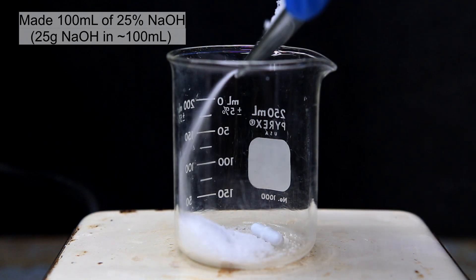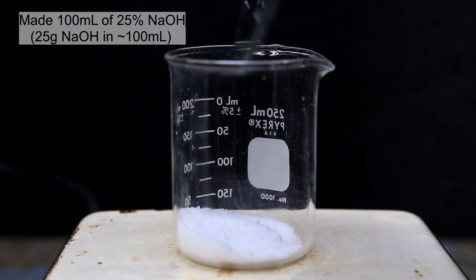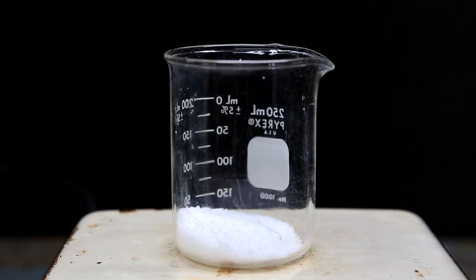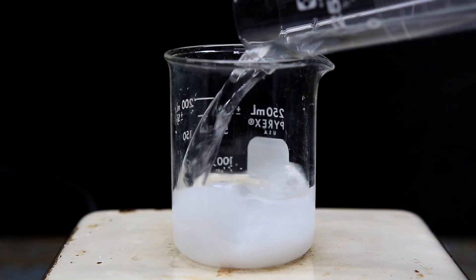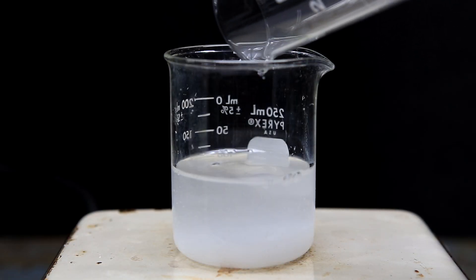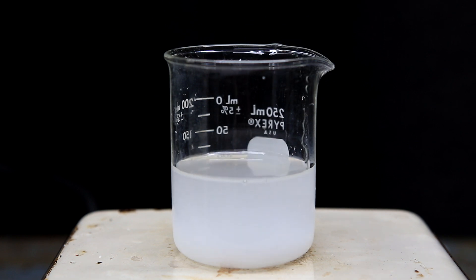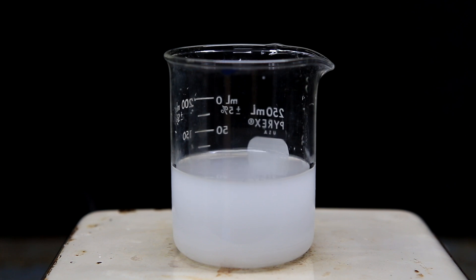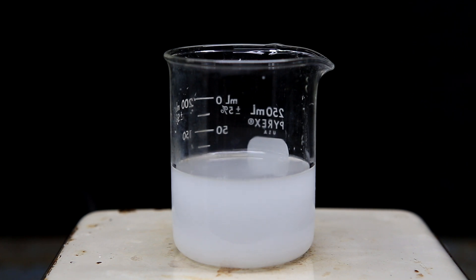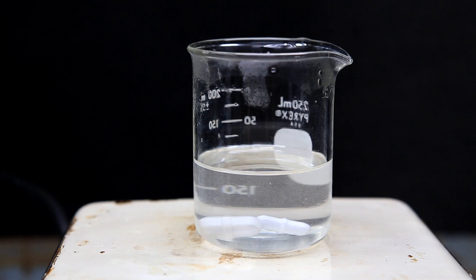The first thing I do is prepare a 25% sodium hydroxide solution. To do this, it's pretty simple and I simply add 25 grams of sodium hydroxide to a beaker and then top it off to 100 milliliters. 100 milliliters of this solution is pretty overkill and in reality we only really need 10 milliliters. The sodium hydroxide will react with our hydrochloride salt and liberate the freebase.